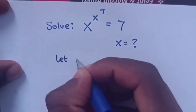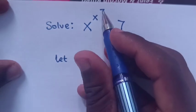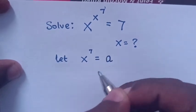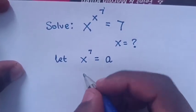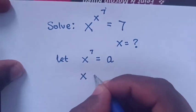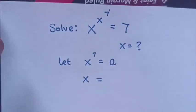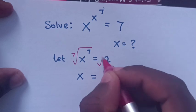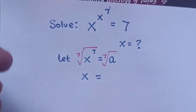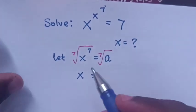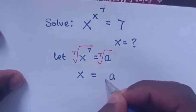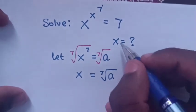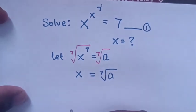First, we let x power 7 is equal to a. To find the value of x, we apply the 7th root on both sides. So 7 will cancel with the 7th root, and x will be equal to the 7th root of a, or a to the 1/7. This will be equation 1.